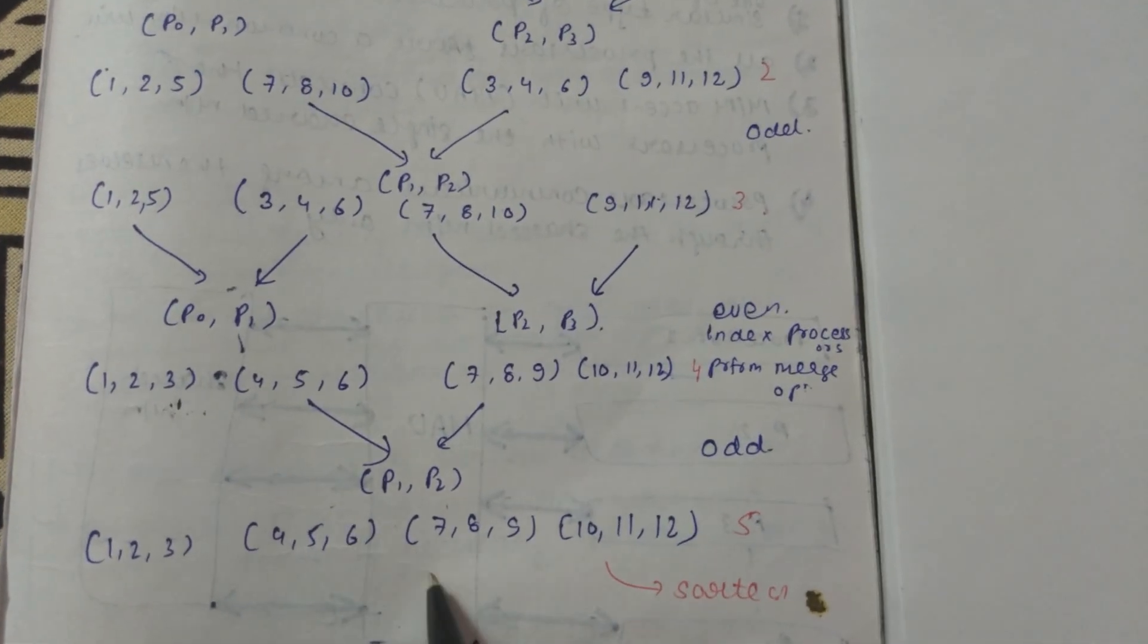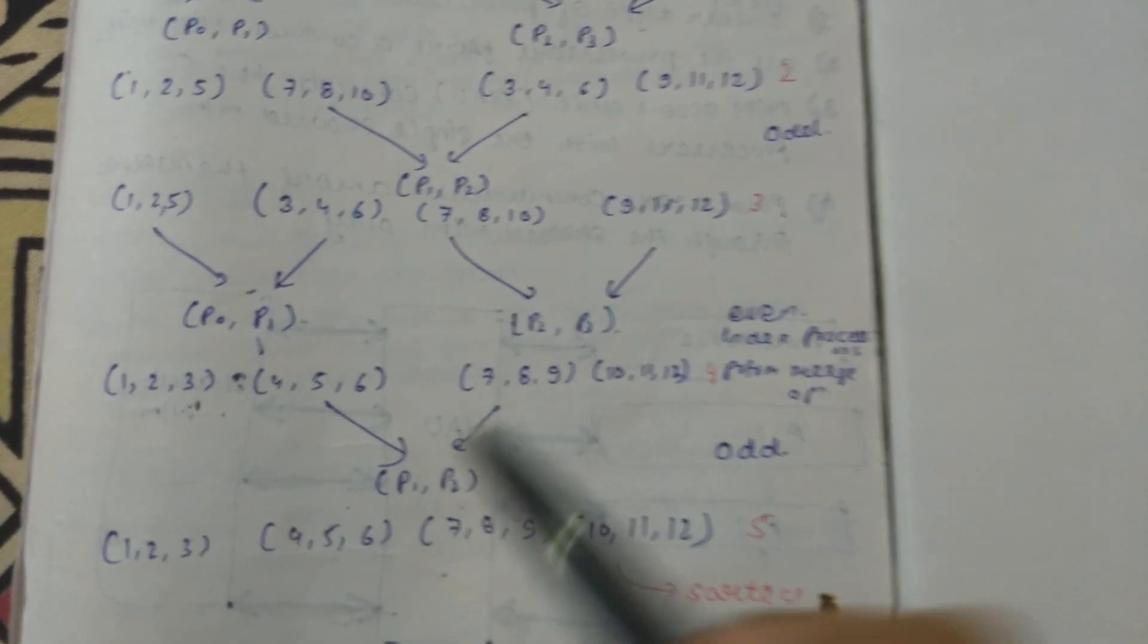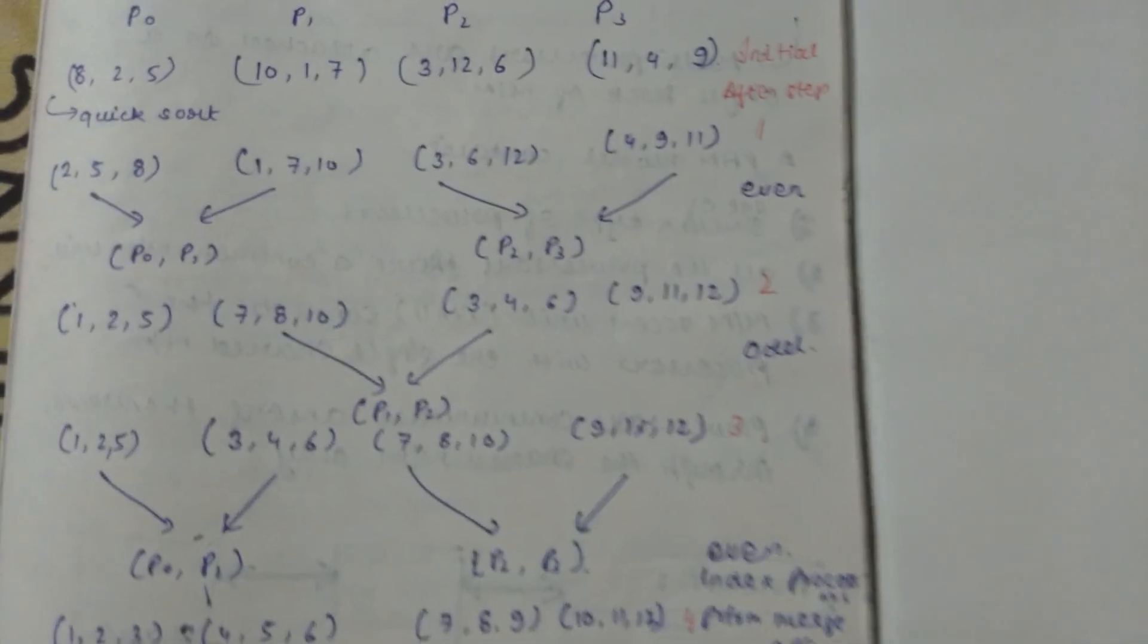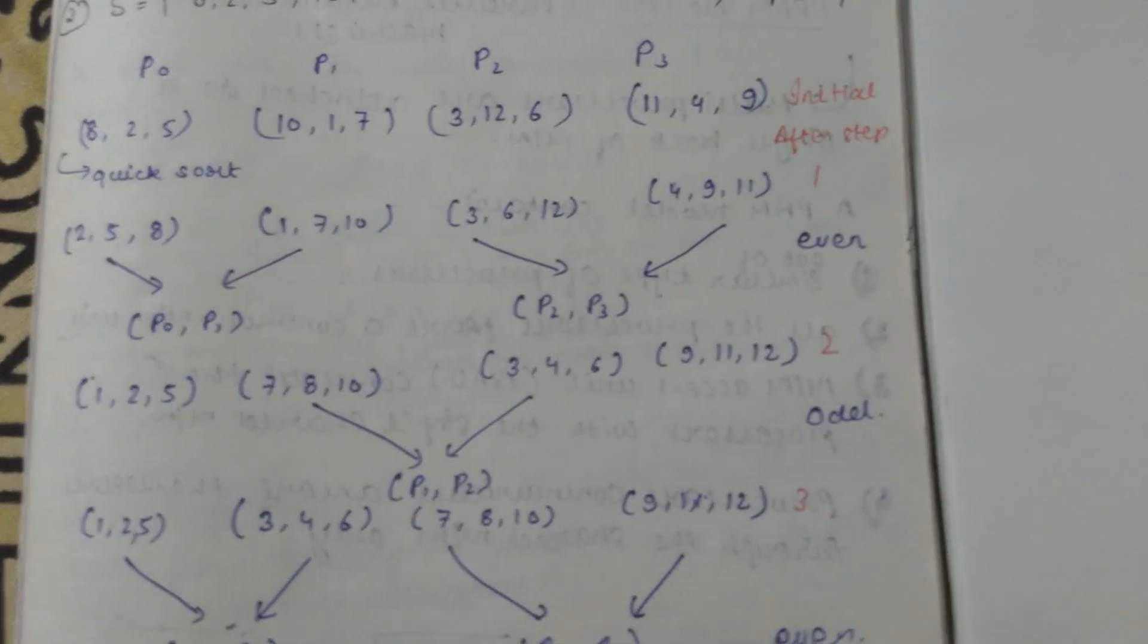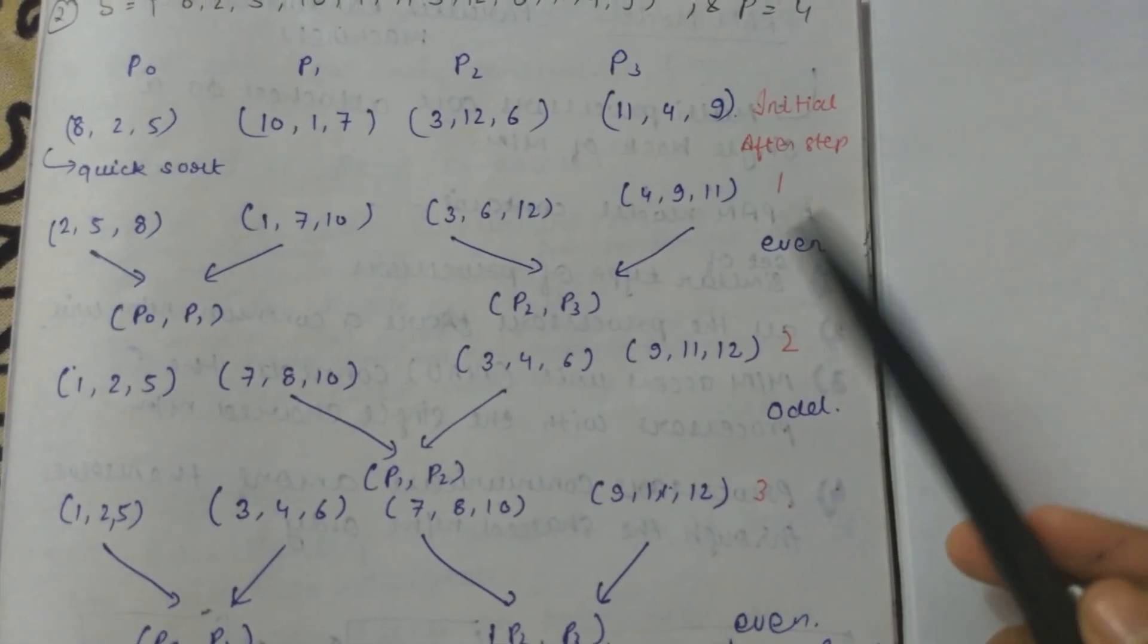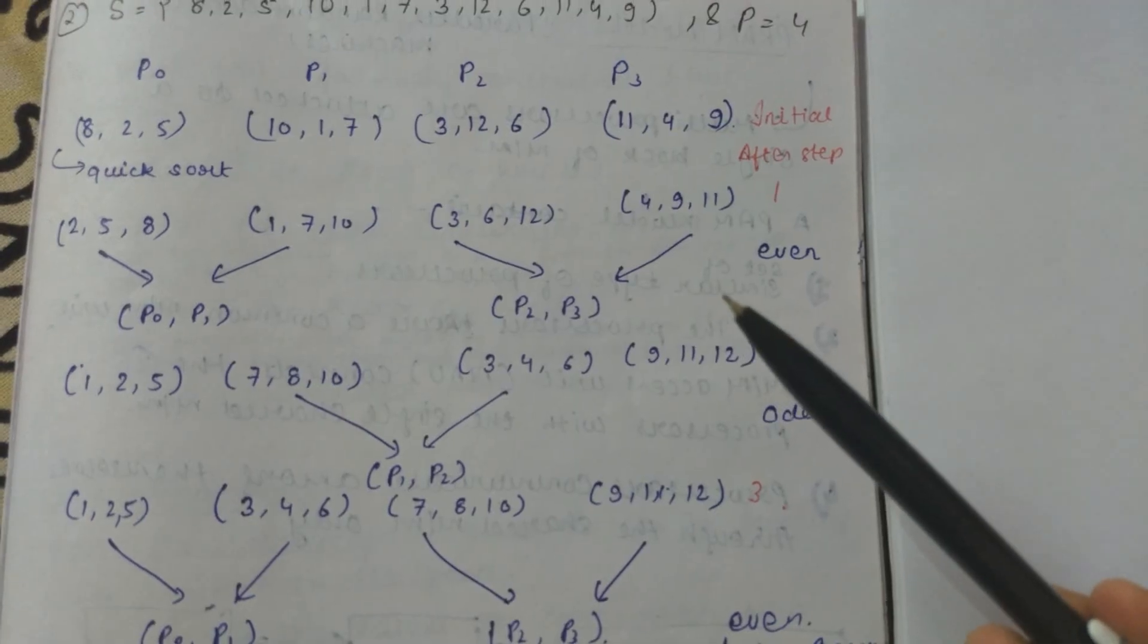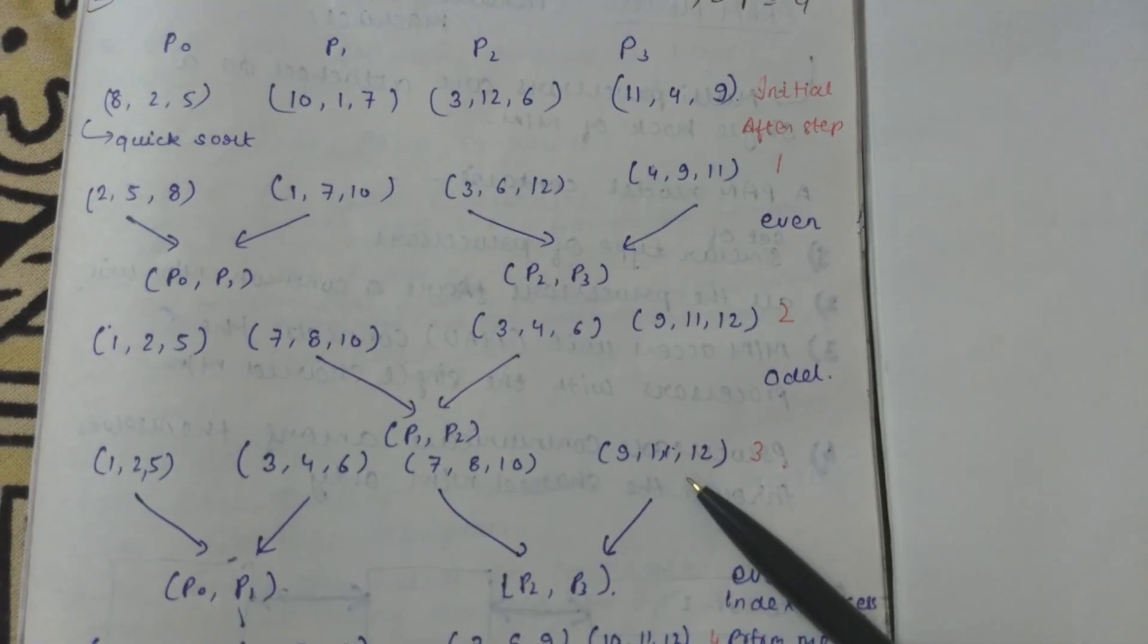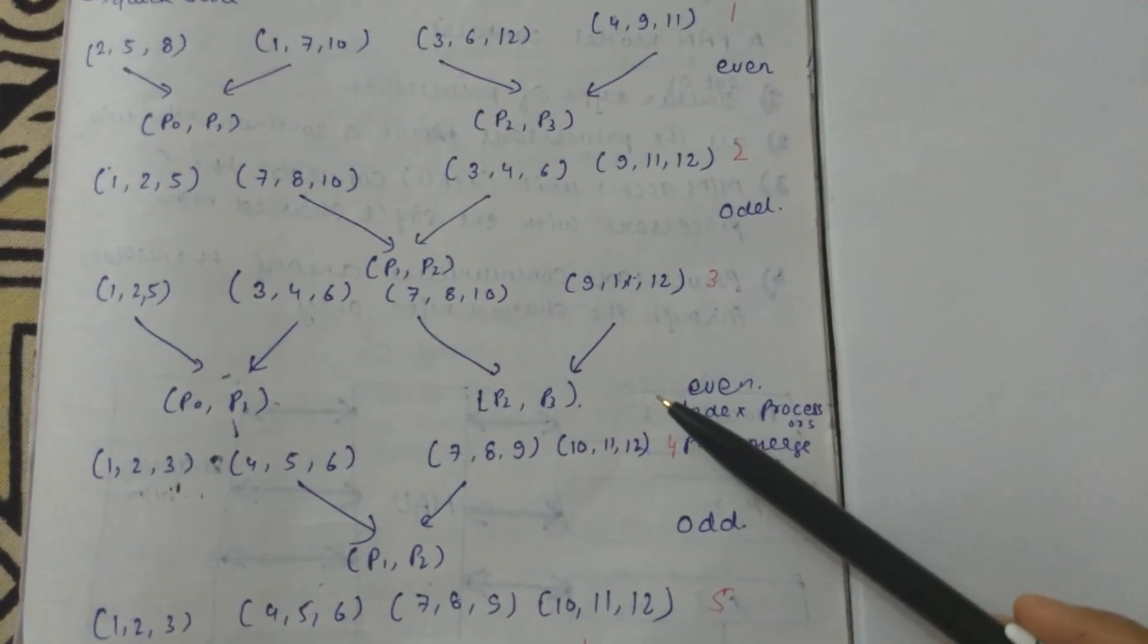We have started from here - after first step that is after the even sort we get this, then after odd sort we get this. Again we repeated the process.